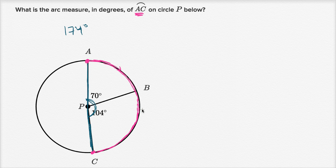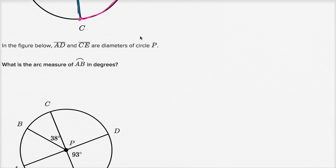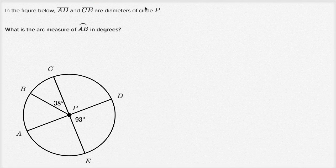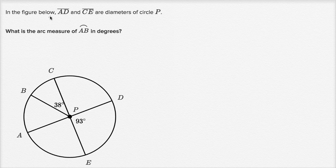Let's keep doing these. So let me do another one. So this next one asks us, in the figure below, segment AD, so this is point A, this is point D, so segment AD is this one right over here. AD and CE are diameters of the circle.